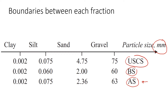Using Australian standards, the boundary between the finest particles — clay and silt — is 0.002 millimeters. The boundary between silt and sand is 0.075 millimeters. And the boundary between sand and gravel is 2.36 millimeters. If you don't remember these values, you can look at the chart — it's available in all textbooks.